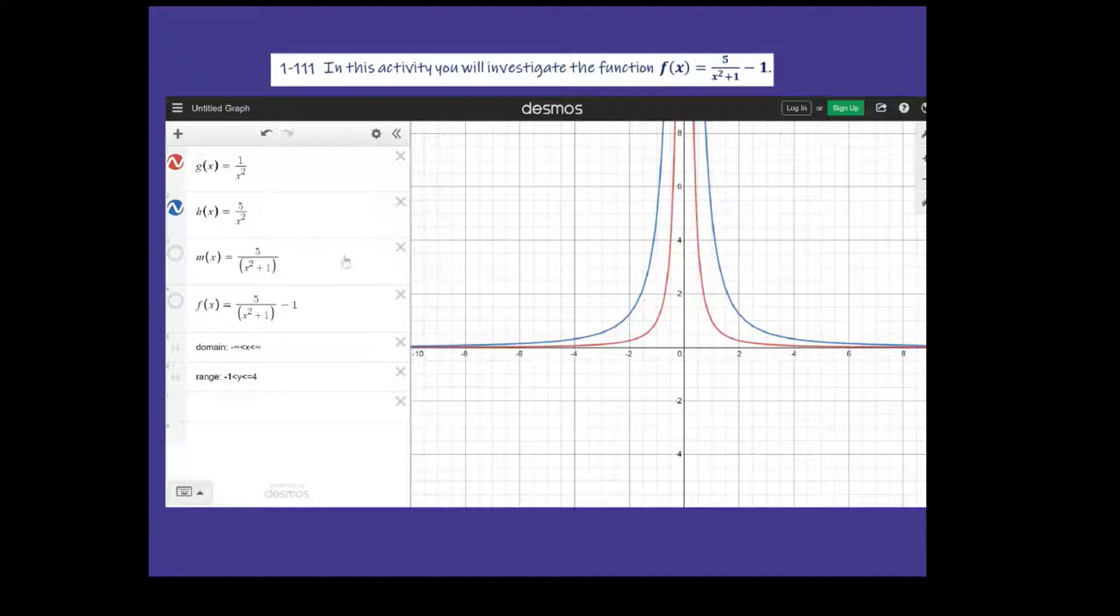Well, then if I go to this m(x), it's a little different because of this plus 1. There's really no x value I can square and add 1 to that's going to make this equation undefined. So I can put any x value in, and you'll see here that if I did put in 0, it would give me 5 over 1, which is 5. So 0 to 5.